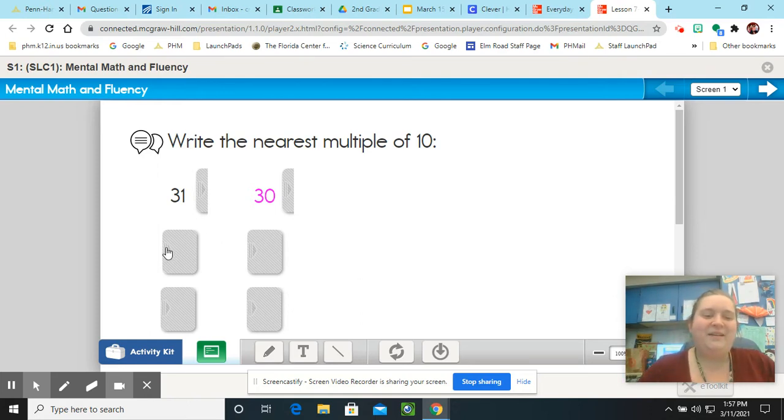Our next one that we are looking at is the number 42. What is the closest or nearest multiple of 10 to that number? There's a 2 in the ones place, so that means we need to keep it down low under 4. If you said 40, you are correct. 30 is a multiple of 10, and 40 is a multiple of 10. They both have 0s in the ones place.